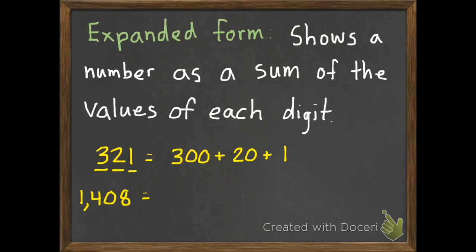One more example of expanded form: 1,408. We take that 1. Its value is 1,000, plus 400, plus nothing, so we don't need to write that down, plus 8. And that is expanded form. The sum of the values of each digit. You can see it's much larger, it's expanded, than the standard form it began with.